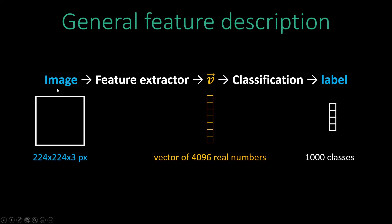What's also interesting is that we can cut apart this network — cut it right here and extract just these features, ignoring the classification part. One really useful application I mentioned in the presentation is that if you have a really powerful feature extractor, you can run any image through it and have feature extraction happen using a network trained on ImageNet — a really large dataset.